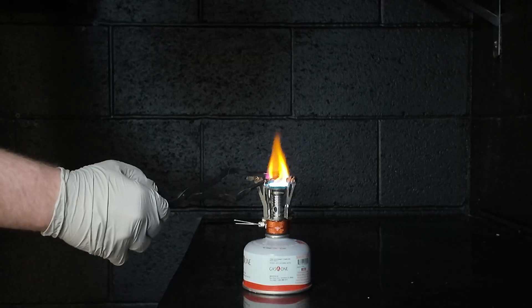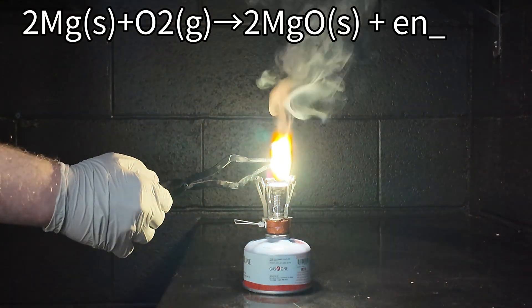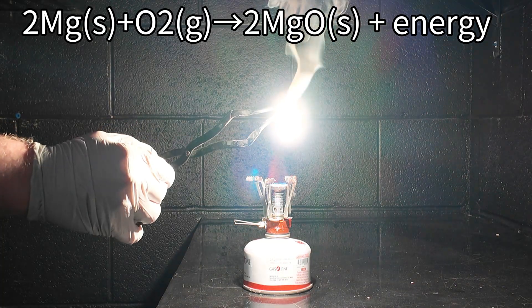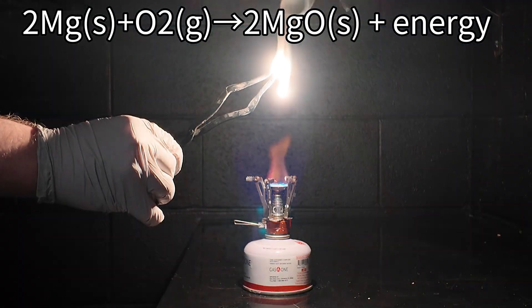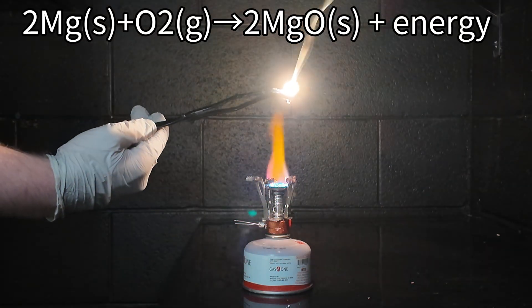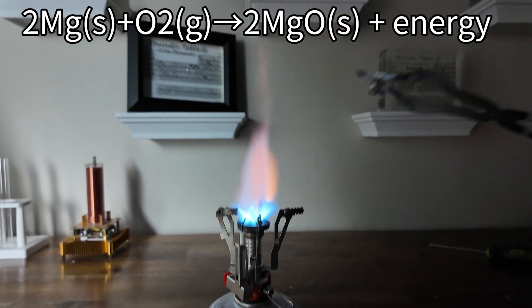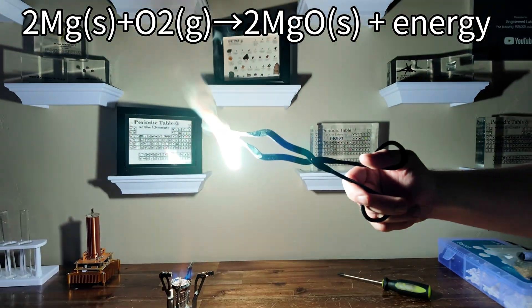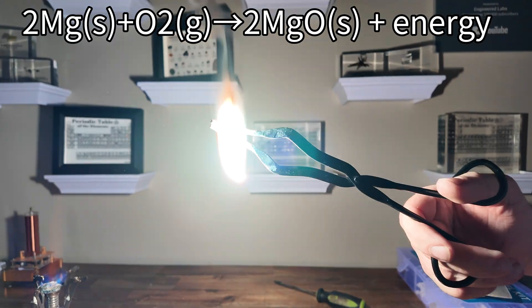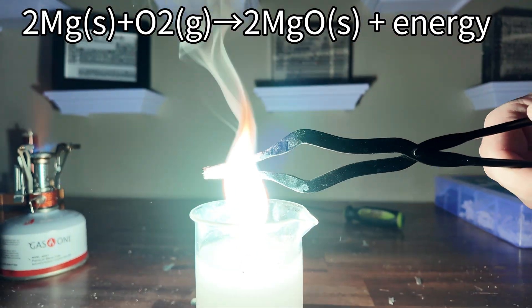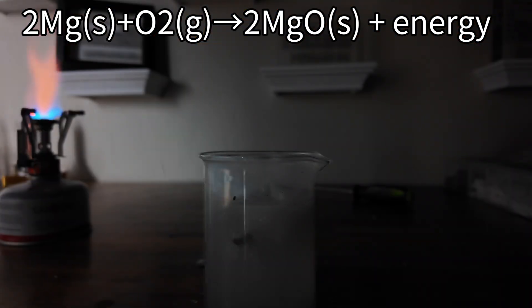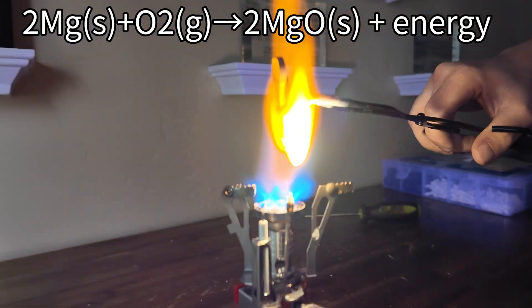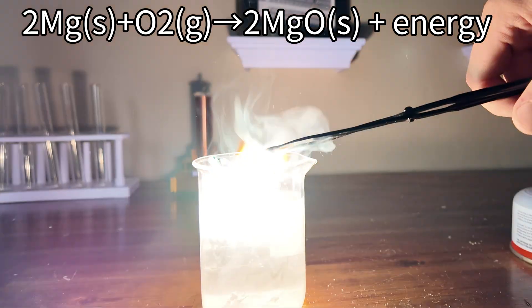So basically, what is happening in this reaction is the magnesium is burning and reacting with the oxygen in the air. As the reaction happens, it is an exothermic reaction. Exothermic just means that the reaction produces energy. It gives off energy. In this reaction, the magnesium reacts with the oxygen, and it bonds with the oxygen, creating magnesium oxide, but it also gives off energy. This energy is in the form of light, the photons that we see, and it's just blinding white, sun-like light.